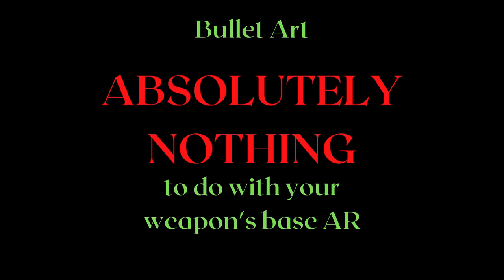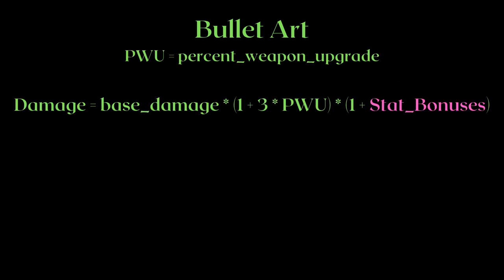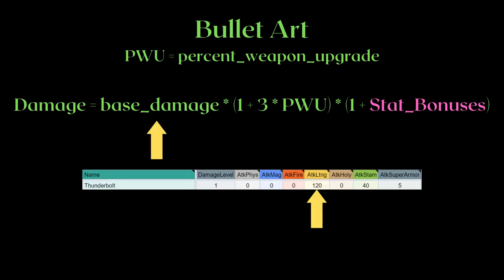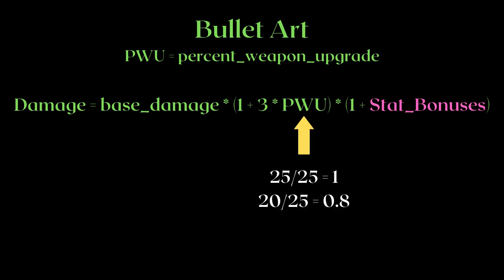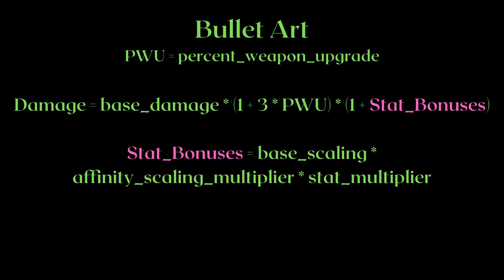Let's take a look at the formula for bullet arts: Damage equals base damage times (1 plus 3 times PWU) plus (1 plus stat bonuses). This looks familiar — base damage is just the bullet art damage on the sheet. We covered PWU as well, and the (1 plus 3 times PWU) term will still be 4 when your weapon is maxed out. But why are the stat bonuses in pink? That's because it is a mixture of three terms.